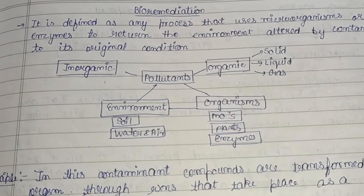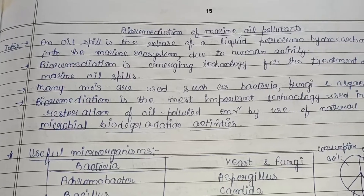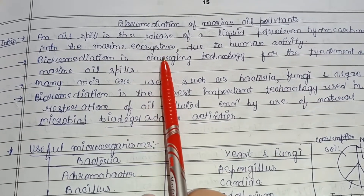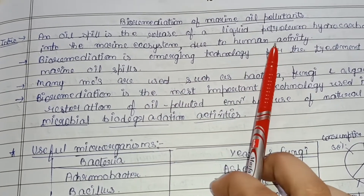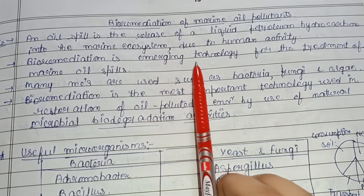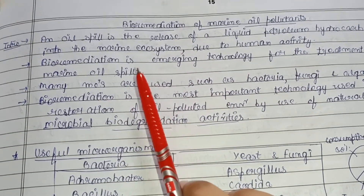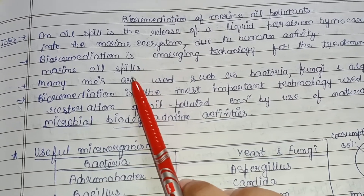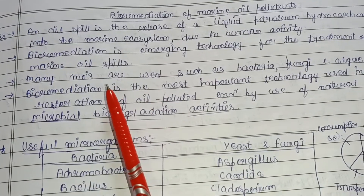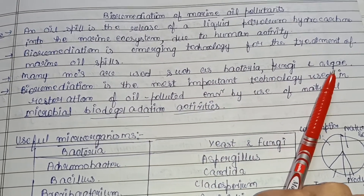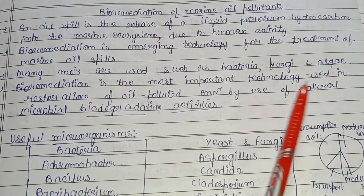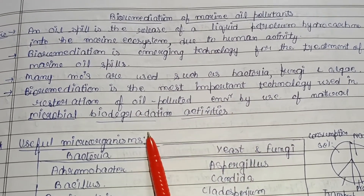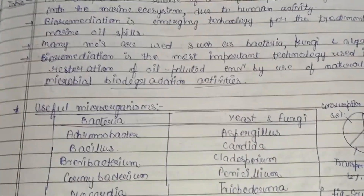An oil spill is the release of liquid petroleum hydrocarbon into the marine ecosystem — basically the ocean or seas — due to human activity. Bioremediation is an emerging technology for the treatment of marine oil spills. Many microorganisms such as bacteria, fungi, and algae are used for treatment. Bioremediation is the most important technology used in the restoration of oil-polluted environments through natural microbial biodegradation activities.